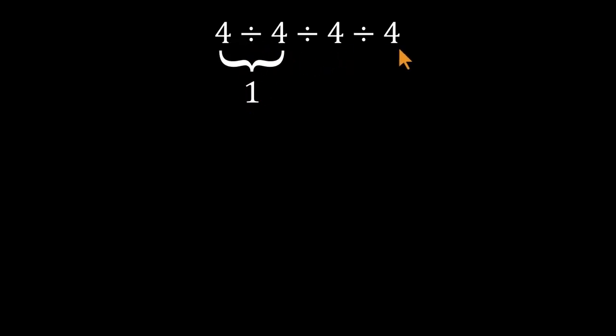Then they take the last two, again, four divided by four, and get one. Finally, they do one divided by one and land on one.